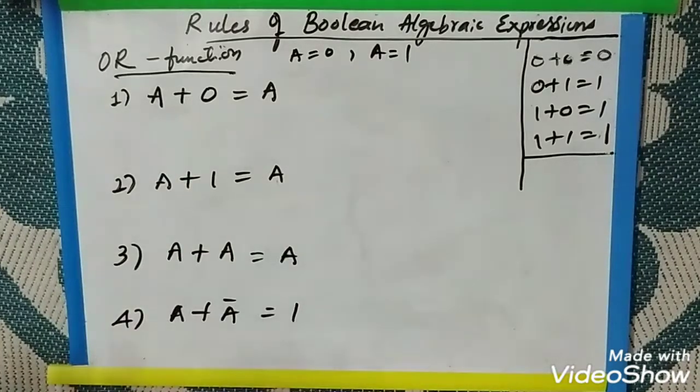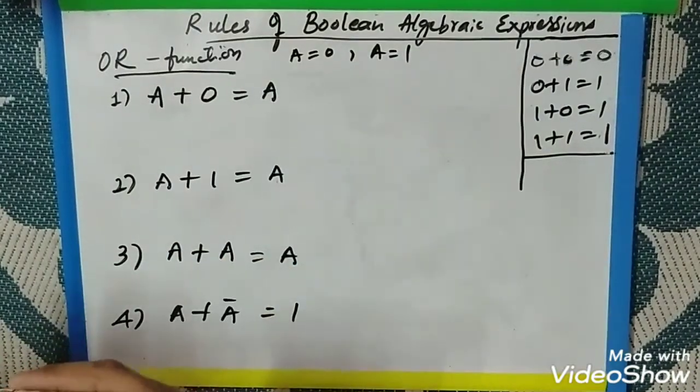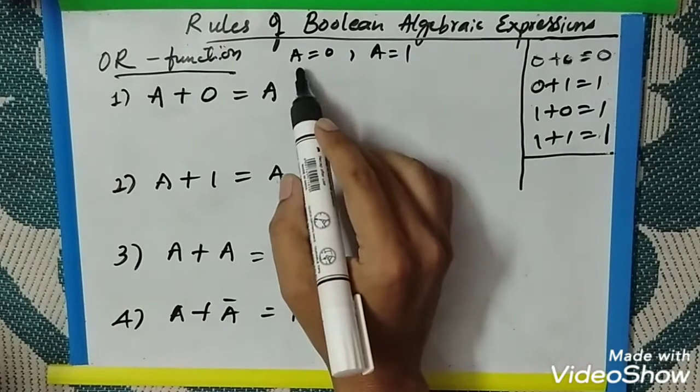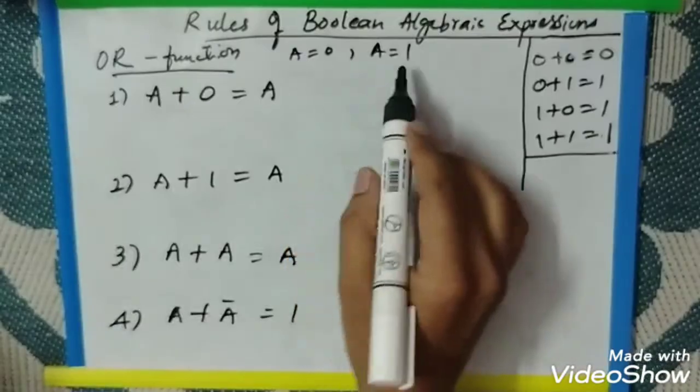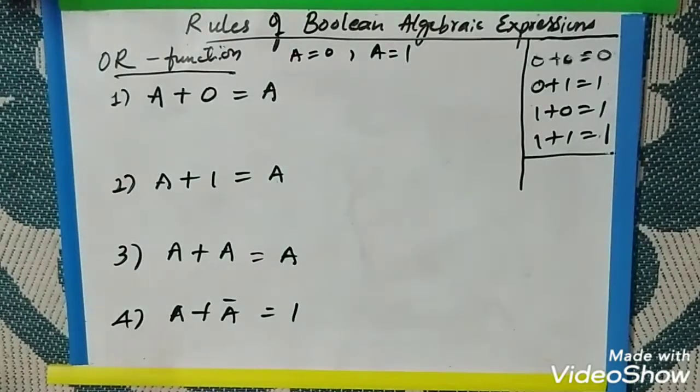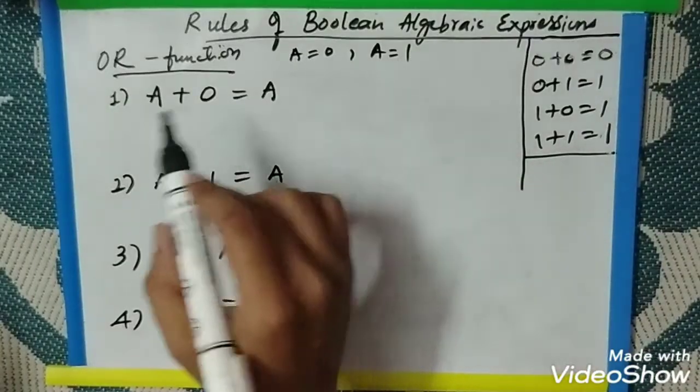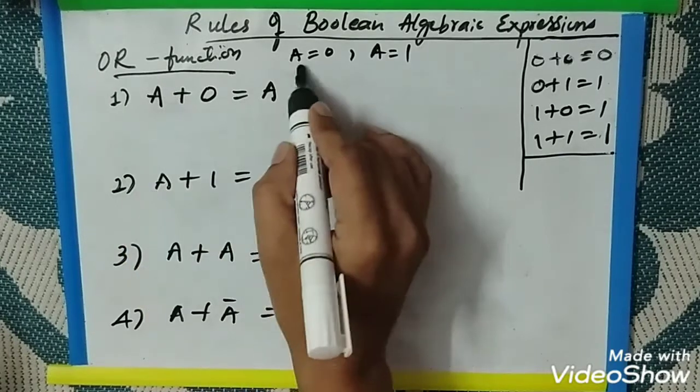Let us see first rule A plus 0 is equal to A. How it is? We need to prove this one. To prove this, we have two numbers 0 and 1 because we are dealing with binary numbers. So we have only two options, 0 and 1. If you substitute A as 0,